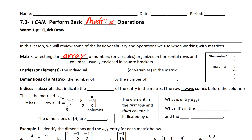A matrix is a rectangular array — that's short for an arrangement of numbers. It's organized in a very specific way: it's got horizontal rows and vertical columns. The rows always go this way and the columns always go this way. One common thing people forget is the order — we always say rows first and then columns second.